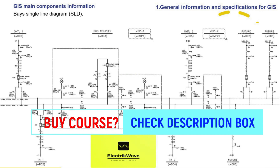Here you can see a single line diagram of 245 kV double bus bar single breaker system, where 5 bays are present and 3 bays are future. Present bays include 2 OHTL bays, 2 transformer bays, and 1 bus coupler bay. This would require 7 LCC panels for voltage transformers for each bus bar.